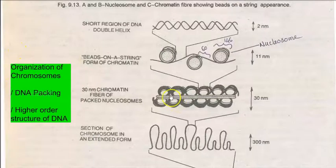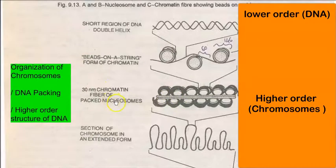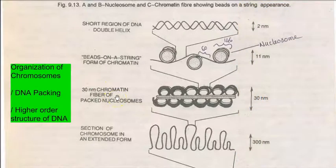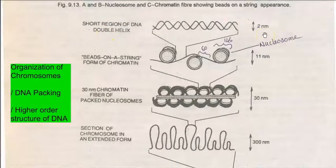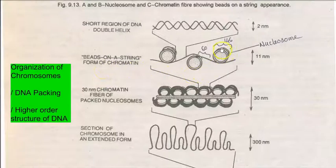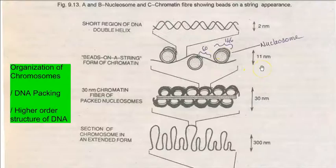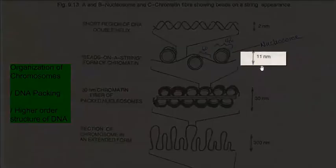This can be described as the organization of chromosomes, DNA packing, or a higher order structure of DNA. The first level is a short region of the DNA double helix, having a very small size of 2 nanometers. The next level of organization is the bead-on-string appearance forming chromatin — a bead made up of an octamer of histones on which 146 base pair DNA is coiled, with adjacent nucleosomes connected by linker DNA of 60 base pairs. This gives a slightly larger size of 11 nanometers.